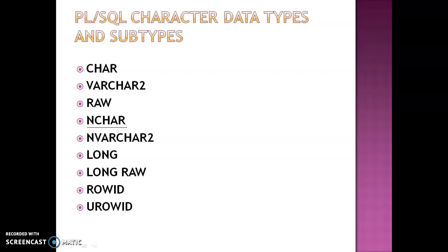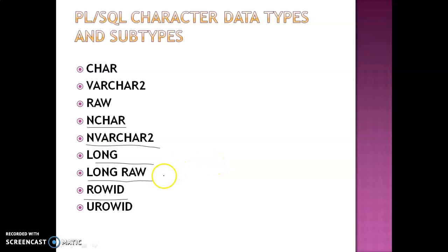NVARCHAR2 stores variable-length national character strings with a maximum size of 32,767 bytes. LONG is a variable-length character string with a maximum size of 32,767 bytes. ROWID is a physical row identifier — the address of a row in an ordinary table. UROWID is a universal row identifier that can be a physical, logical, or foreign row identifier. These are all the character data types.